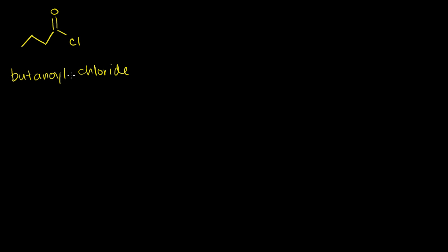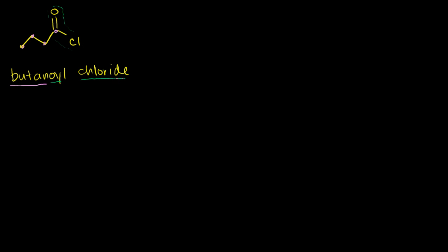We saw a couple of videos ago that for acyl halides, you just count the main number of carbons — one, two, three, four carbons. That's where the 'butan' comes from. And then this is an acyl chloride. So the acyl chloride part gives us the 'oyl'. You could look at the carbonyl — we know it's a carboxylic acid derivative, it's an acyl chloride — so that's why we have the 'oyl' here and the 'chloride'.